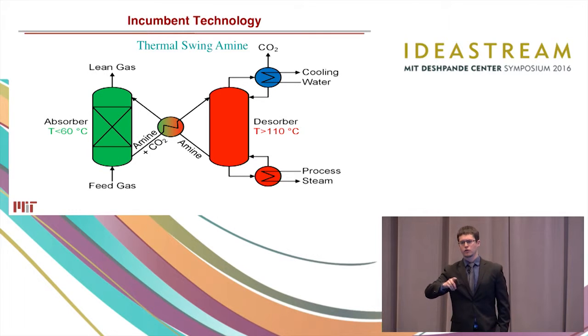We have the same absorber, but then we go to this thermal desorber which runs really hot, above 110 degrees C. That means we need process steam, we need cooling water. And while cooling water may be available someplace you'd like to capture carbon dioxide, processing steam probably is not. So in addition to the capital expenses associated with the absorber and the desorber, now you have to build a boiler to provide your process steam, which serves to drastically increase the capital.